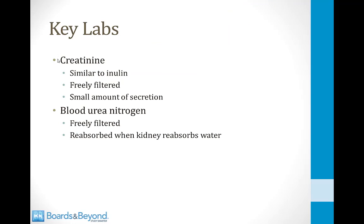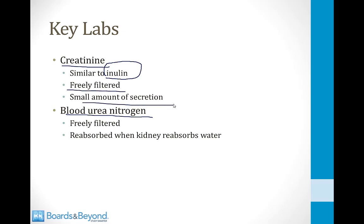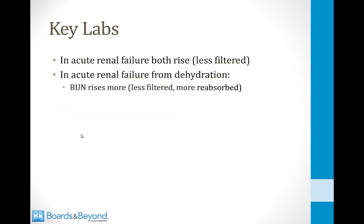The key lab values for diagnosing acute renal failure are serum creatinine and blood urea nitrogen. Creatinine is freely filtered with a small amount of secretion. BUN is also freely filtered but is reabsorbed when the kidneys reabsorb water. In acute renal failure, both BUN and creatinine rise because less is being filtered.